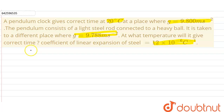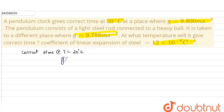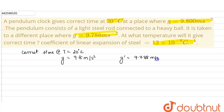What is given: the pendulum clock gives correct time at a temperature of 20 degrees Celsius, where the acceleration due to gravity is 9.8 meters per second square. This pendulum clock is then taken to another place where the acceleration due to gravity is 9.788 meters per second square.